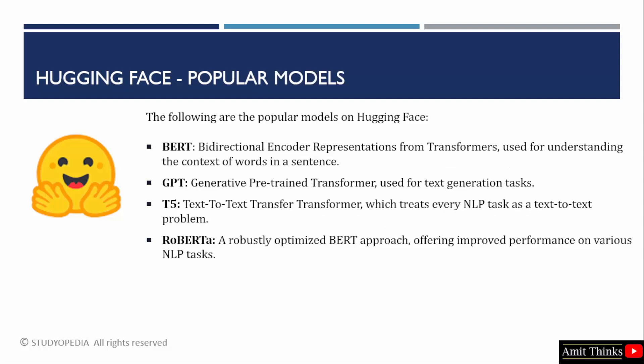Let us see some of the popular models on Hugging Face. The widely used BERT is used for understanding the context of words in a sentence. Its full form is Bidirectional Encoder Representations from Transformers. It is a powerful open source machine learning framework developed by Google for NLP. It excels at understanding the context of words and sentences by analyzing relationships between them in a bidirectional manner, which allows computers to better understand the meaning of ambiguous language.